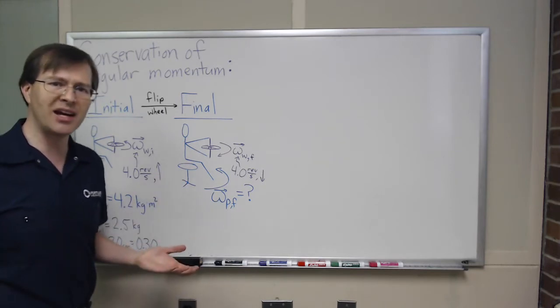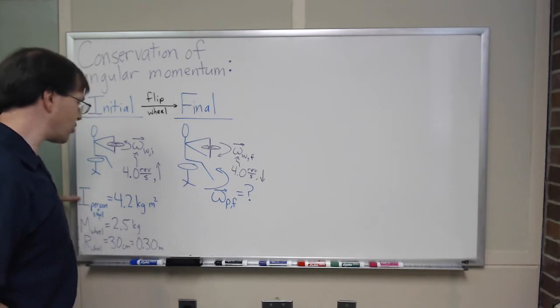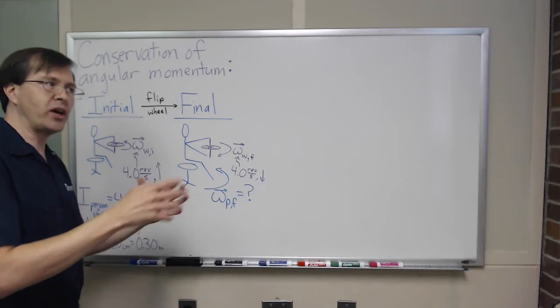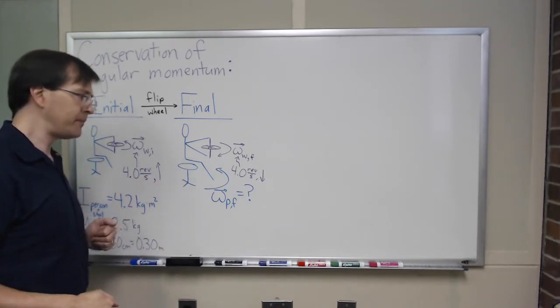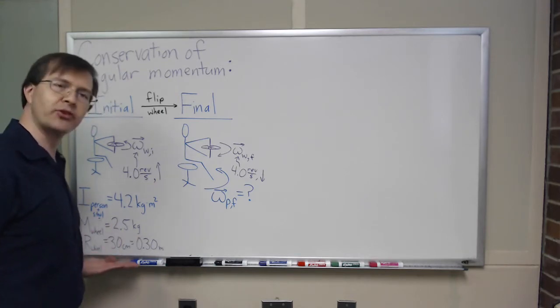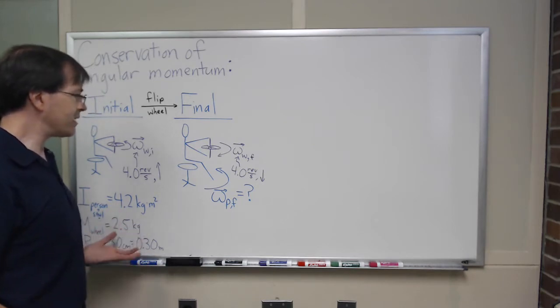Some data to put in there. I've estimated that the moment of inertia of me and the stool and something about the center of mass of the wheel, all that is about 4.2 kilogram meters squared. The mass of my wheel is about 2.5 kilograms. The radius of the wheel is about 30 centimeters, so about 0.3 meters. That's what I've got in my story.